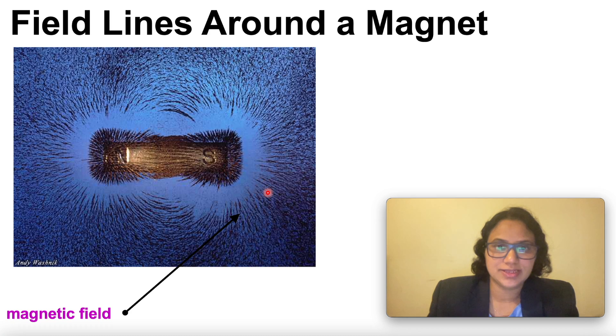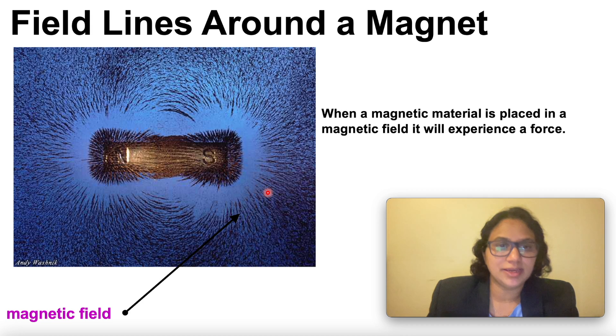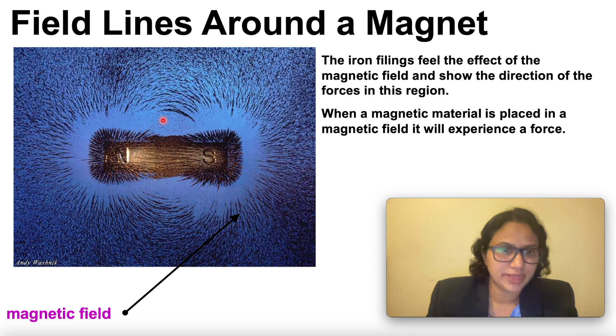What are field lines around a magnet? As I mentioned, when a magnetic material is placed in a magnetic field, it experiences a force.